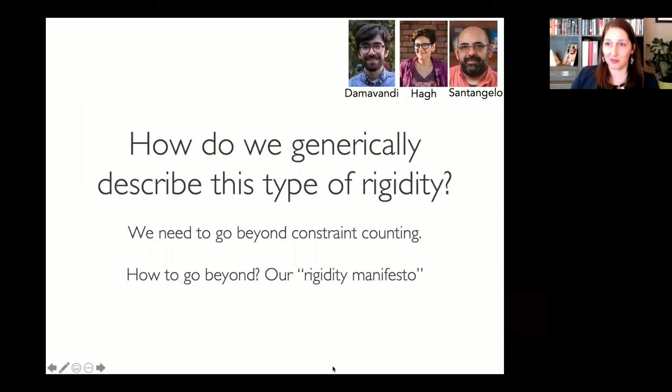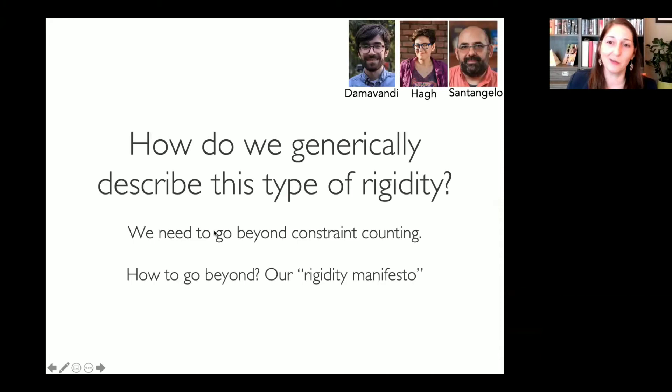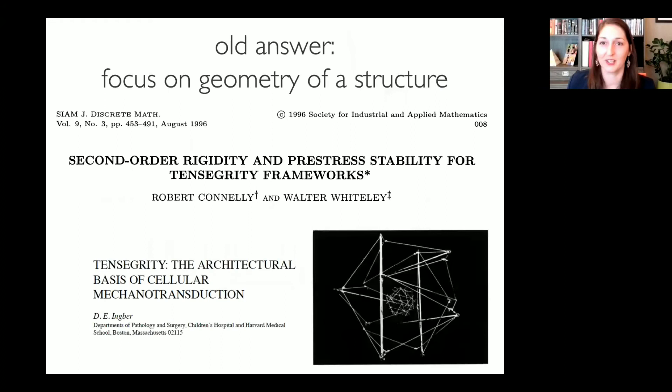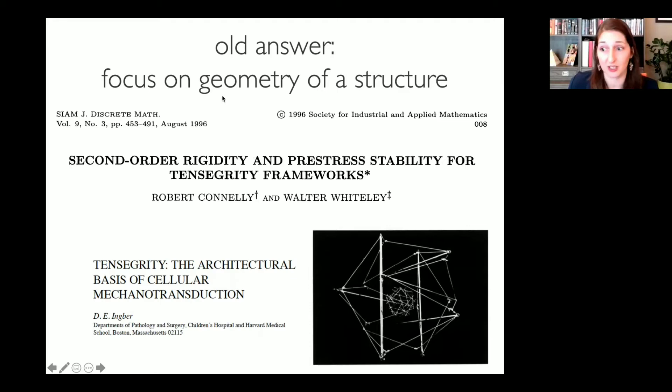Now we're to the math part — our rigidity manifesto. We want to generically describe this type of rigidity in a coherent way. How do we go beyond constraint counting? There is a beautiful old answer focused on tensegrity structures or bar-hinge frameworks, where you focus on the geometry. You ask when are the constraints satisfied — that's a geometry problem. If the lengths of each bar equal its rest length, the constraints are satisfied.